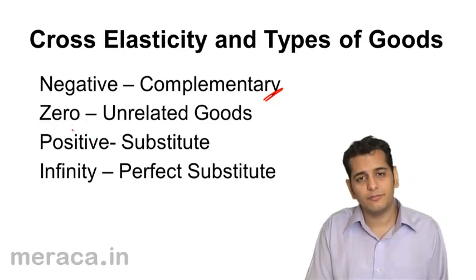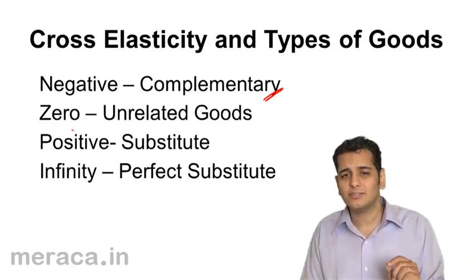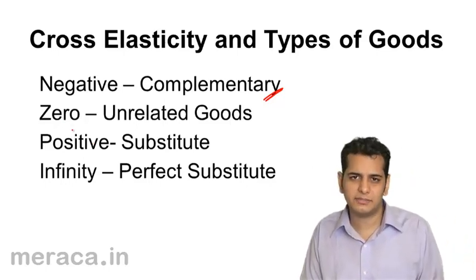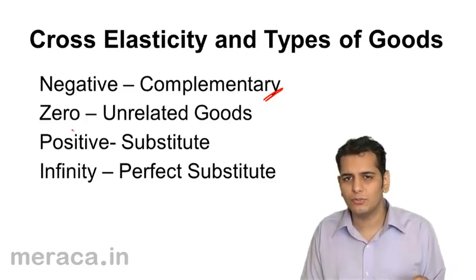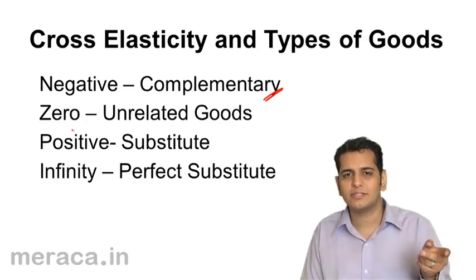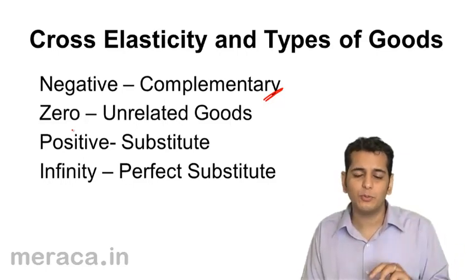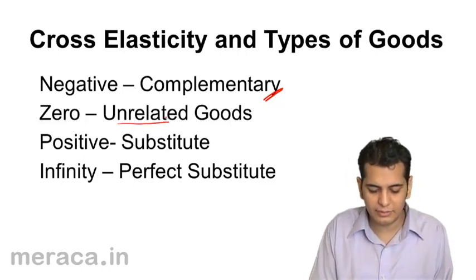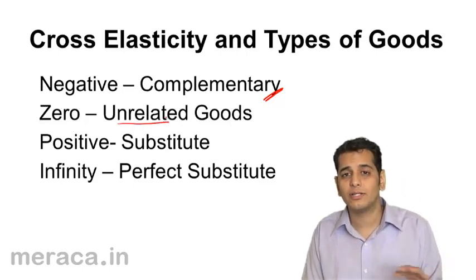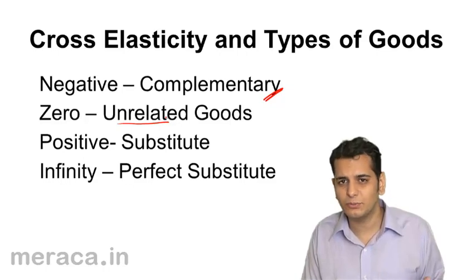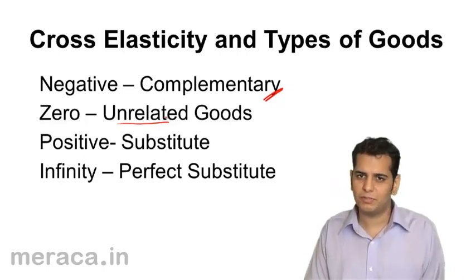Thus, if the cross elasticity of any good is zero, we can say that it is between two unrelated goods — unrelated. There is no relation, and they are neither substitutes nor complements.